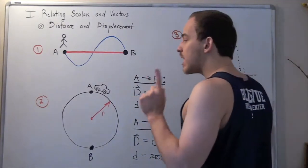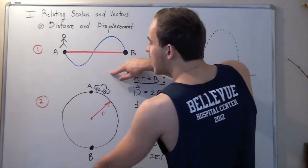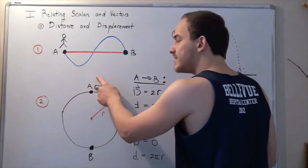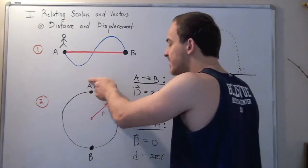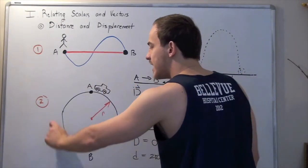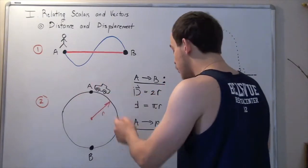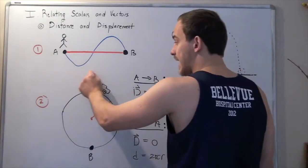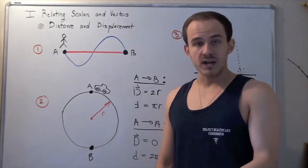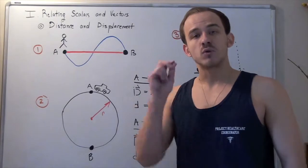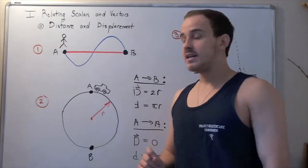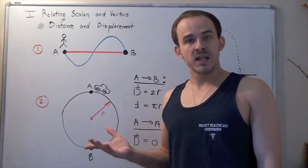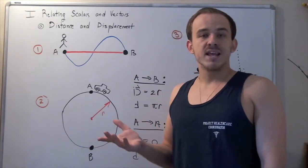What if the car traveled from A to B and then back to A, completing a full circle? The distance is the actual pathway taken, which is the full circumference: 2πR. The displacement in going from A back to A is simply 0 — the most direct pathway the car could have taken to get from point A back to point A is to stay in the same place.